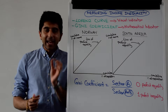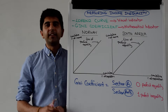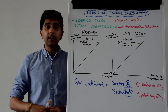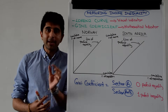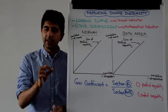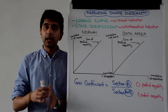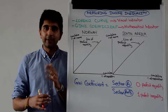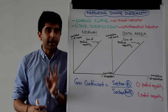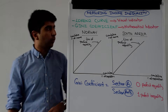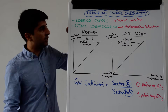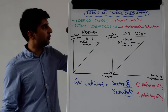Hi everybody. Given that income inequality is one of the biggest criticisms of free labour markets, it's important that we know how to measure it so that we can justify whether government intervention to help redistribute income is necessary or not. Economists use two different measures of income inequality: one is a visual interpretation, the other is a mathematical calculation.